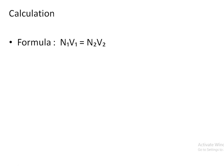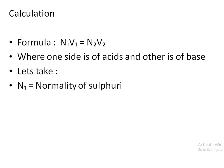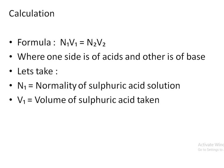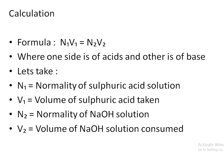Calculation part: the formula we will use is the normality equation N₁V₁ = N₂V₂, where one side is of acid and the other is of base. N₁ is the normality of the sulfuric acid solution, V₁ is the volume of sulfuric acid taken, N₂ is the normality of NaOH solution, and V₂ is the volume of NaOH solution consumed.